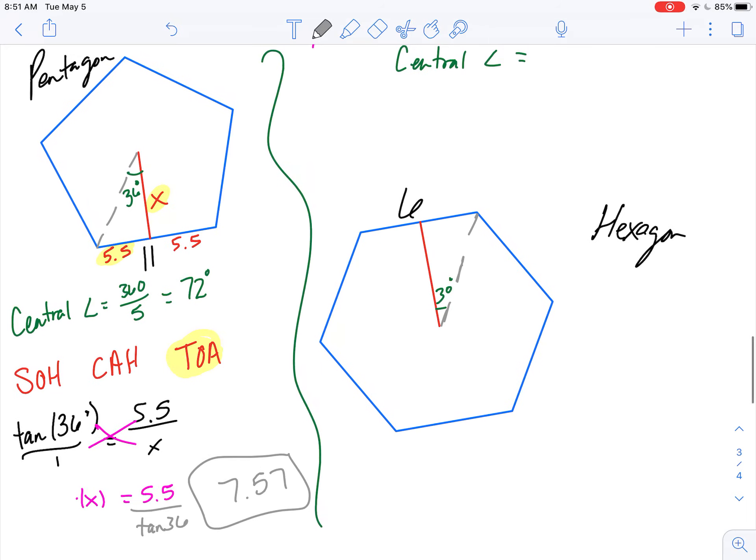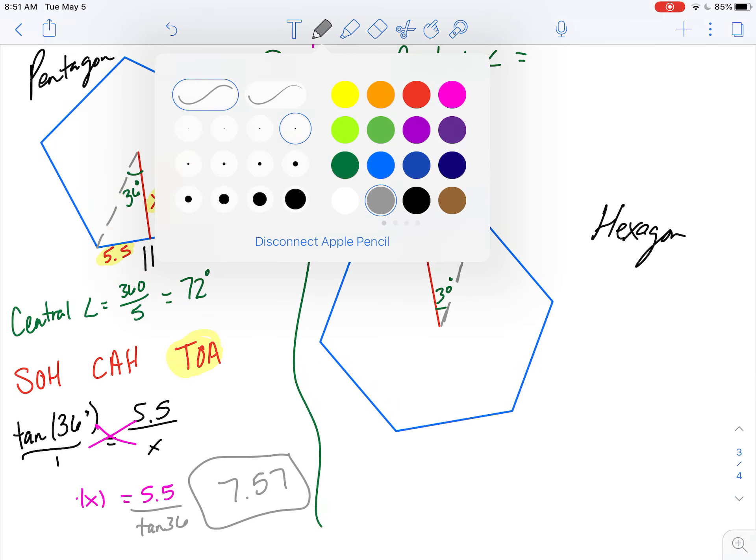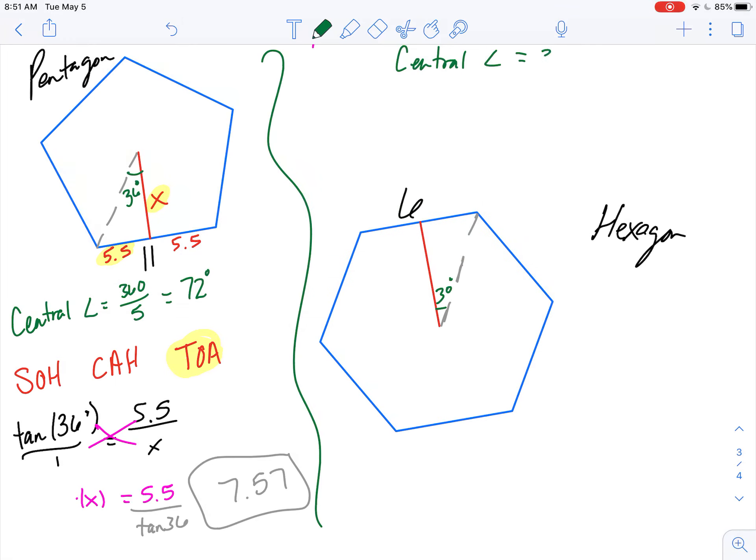All right, so we're going to take the same approach. First things first, we'll find our central angle, which is 360 over number of sides. And you'll cut that in half, because you don't want the whole angle, you just want half of it.